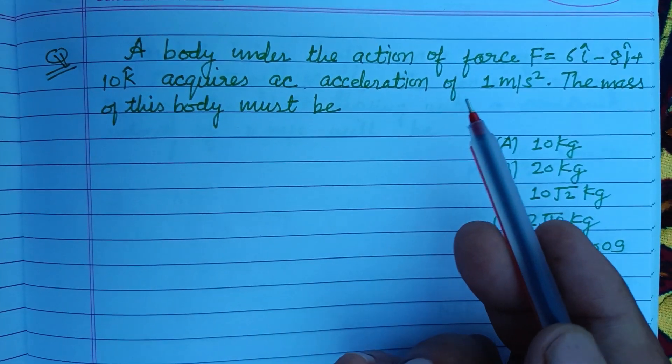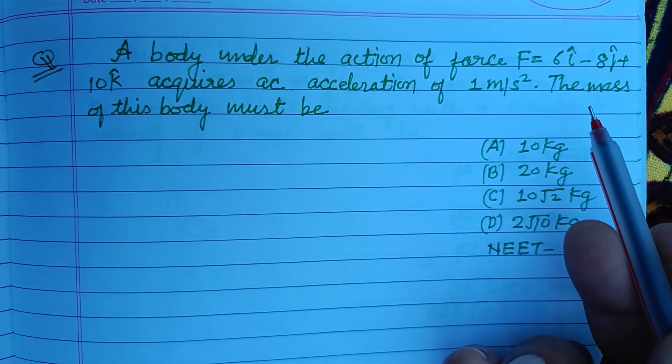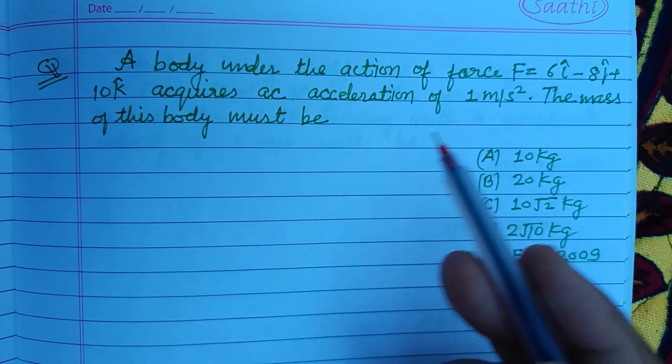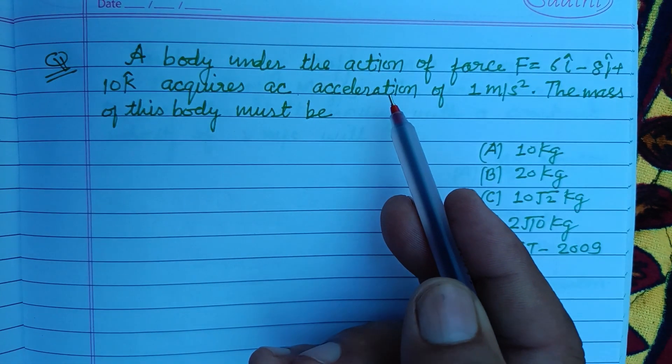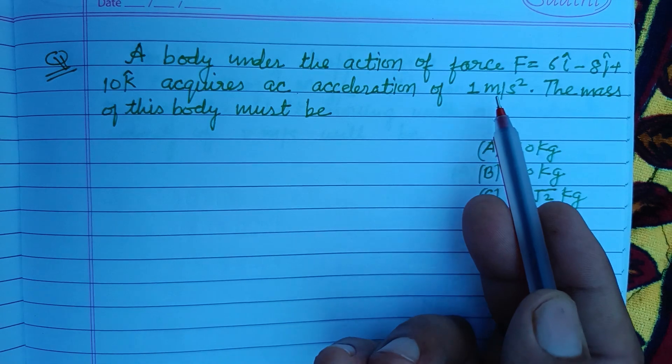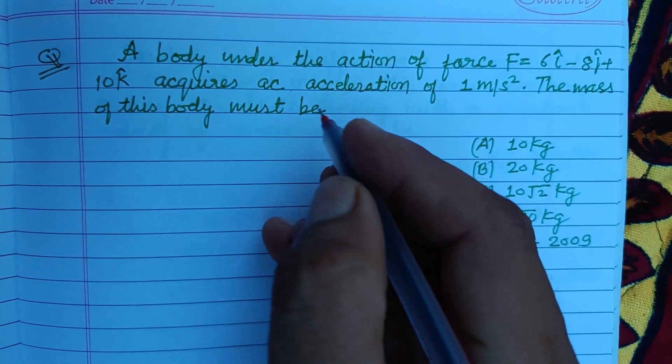A body under the action of force F equal to 6i minus 8j plus 10k acquires an acceleration of 1 meter per second squared. The mass of this body must be.